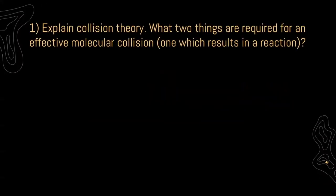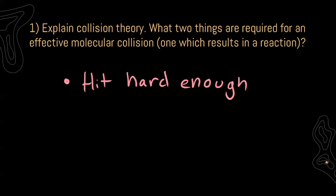For number one it says explain collision theory. What two things are required for an effective molecular collision — one which results in a reaction? For collision theory, this is where we're talking about our particles crashing into each other. Our reactants are always going to be constantly in motion crashing into each other and eventually they're going to become something new. In order for this to happen, one, they need to hit hard enough. Simply crashing into each other is not going to be enough. They need to hit hard enough to break the bonds that have already formed within the molecules so that they can form something new.